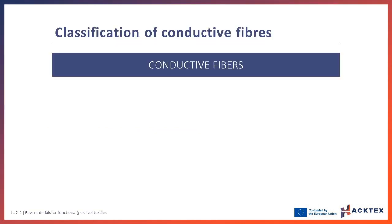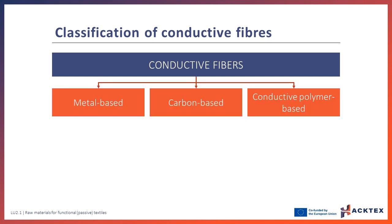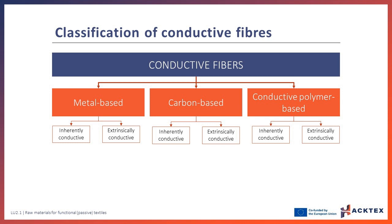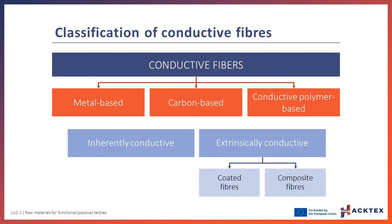Conductive fibers can be classified based on the type of conductive material. There are metal-based fibers, carbon-based fibers, or conductive polymer-based fibers. Electrical conductivity can be imparted to the fibers inherently or extrinsically. Inherently conductive fibers are completely produced from a conductive material. In extrinsically conductive fibers, the conductive properties are achieved by coating the surface of the fiber, or by mixing the conductive material with another material to produce the fiber — these are called composite fibers.